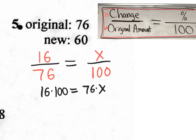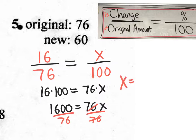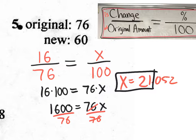Let's set it up. 16 times 100 equals 76 times X. That would be 1,600 equals 76X. To get rid of the 76, I divide by it. And with the calculator, we get X equals, it's ugly, 21.052. But then again, they want us to round to the whole percent. So we just say 21%. So the answer to number five is 21%. And we said it was a decrease. Got it?